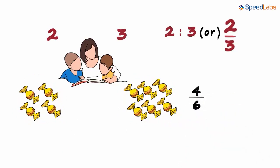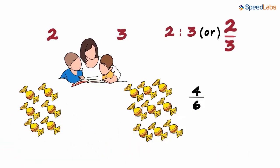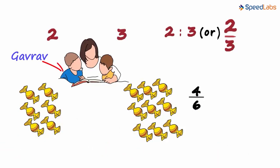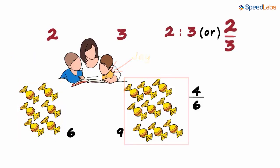The magic hand again gives Gaurav two chocolates and Jai three chocolates. Now the total number of chocolates with Gaurav is 6 and the total number of chocolates with Jai is 9. So the ratio becomes 6 by 9.